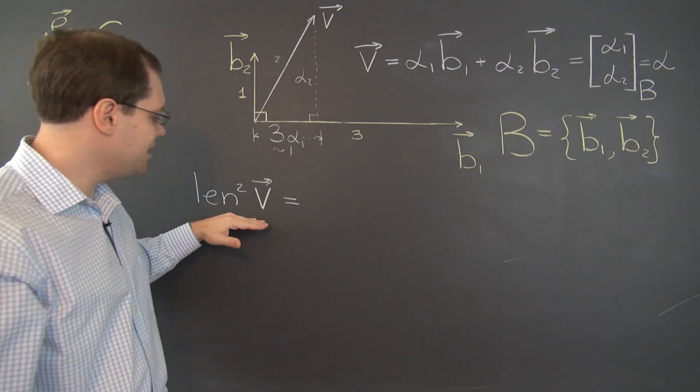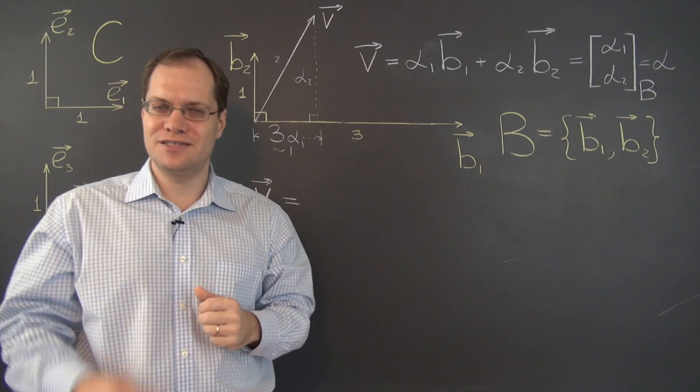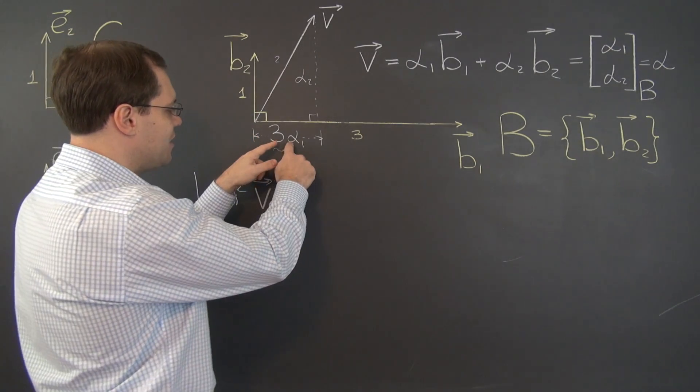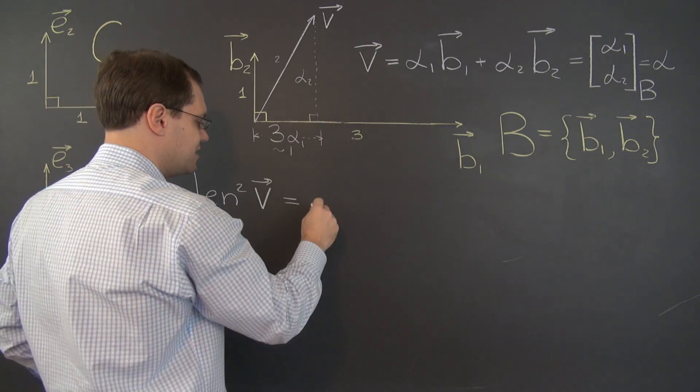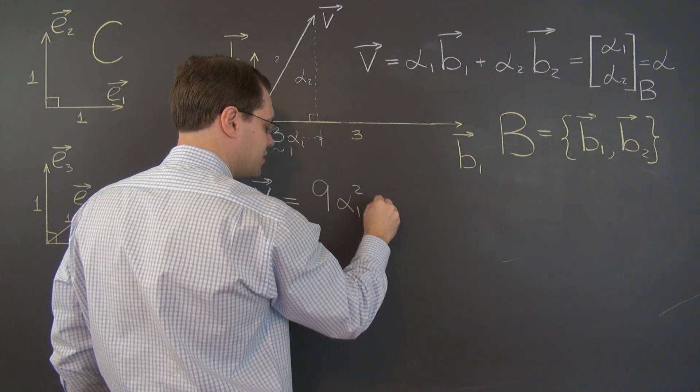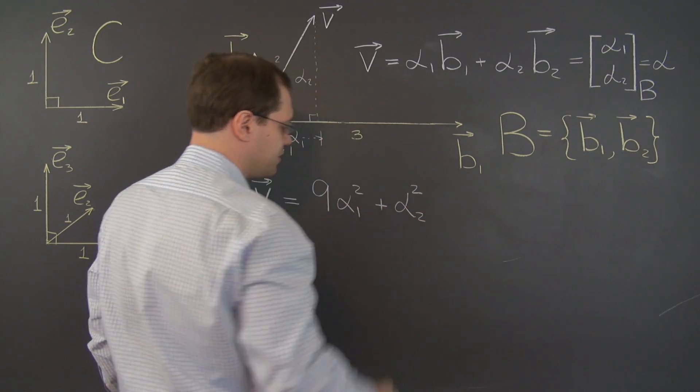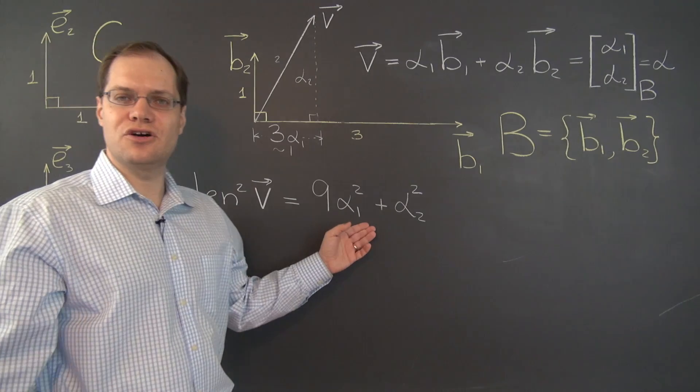And so, the length of vector v, we're going to go for the length squared so we don't have to deal with square roots, is now this squared plus this squared. So it's 9 alpha 1 squared plus alpha 2 squared. And there you go.